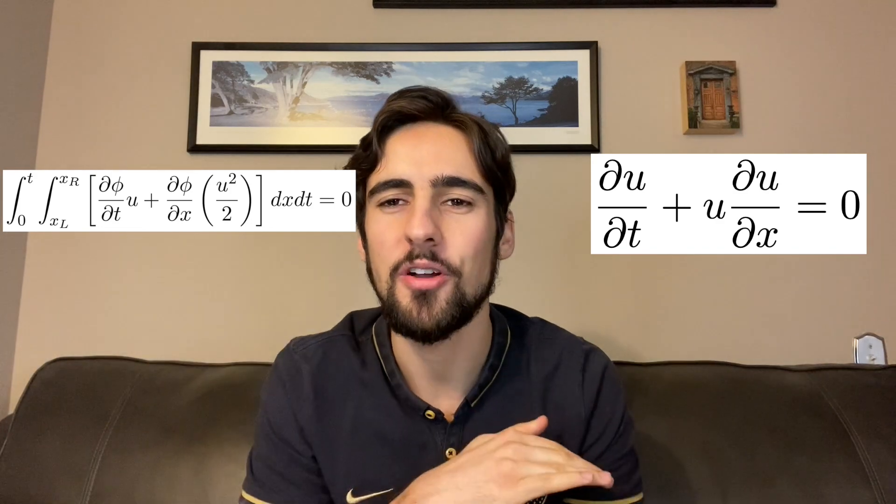So a question that some people might have is, is the weak form of a PDE actually correct? I mean, it just seems so arbitrary. And my answer to that is, why not? I mean, what makes the weak form of a PDE any more arbitrary than the strong form? They're both arbitrary.